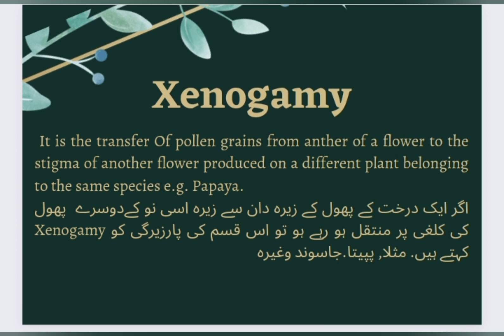اگر ایک درخت کے پھول کے جیرے دان سے جیرا اسی نوع کے دوسرے پھول کی کلغی پر منتقل ہو تو اس قسم کی پار جیرگی کو Xenogamy کہتے ہیں۔ مثلاً، پپیتا، جاسمین وغیرہ۔